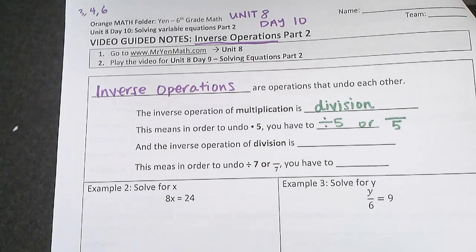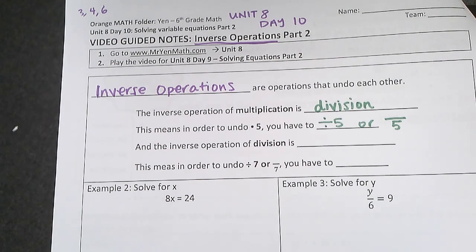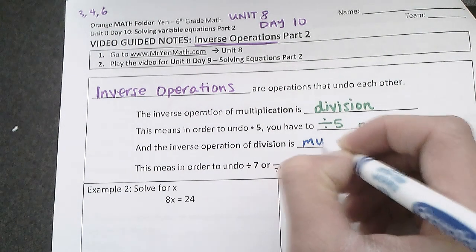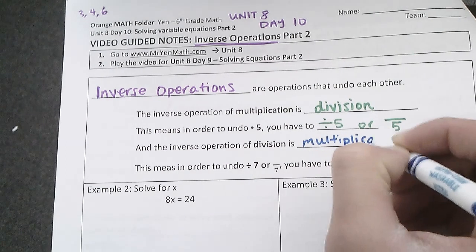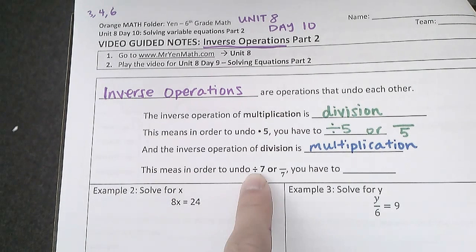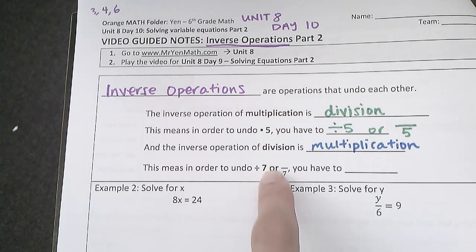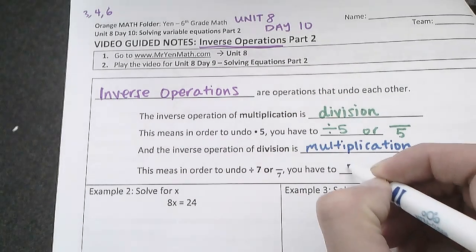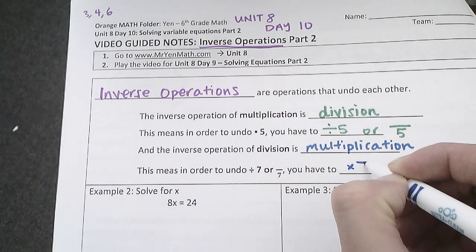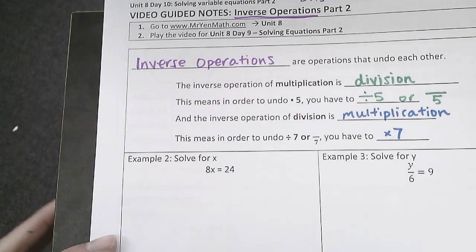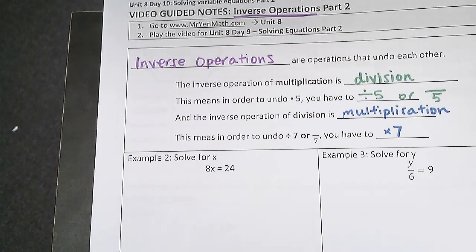And the inverse operation of division is multiplication. So this means in order to undo dividing by 7, or if it's a number over 7, you have to multiply by 7.